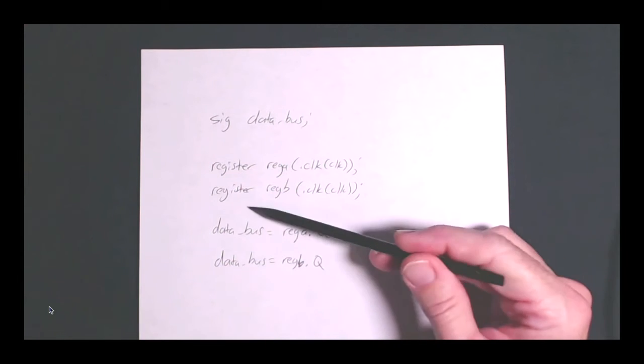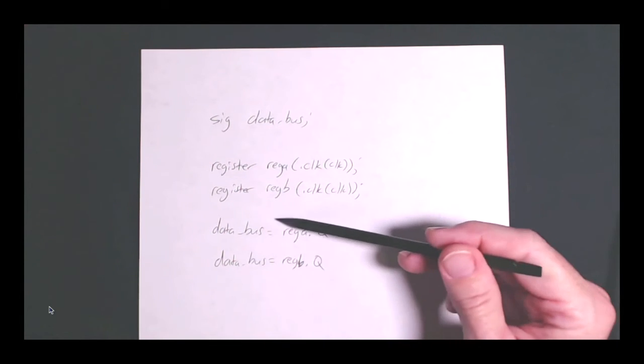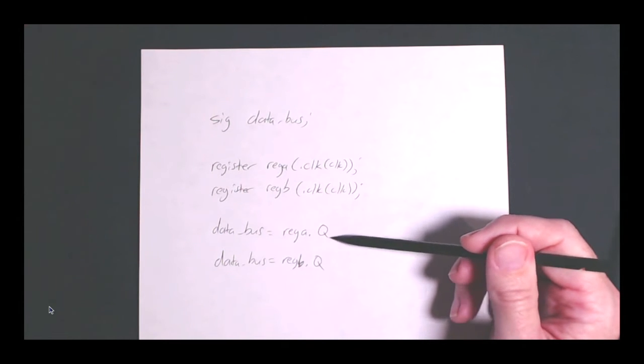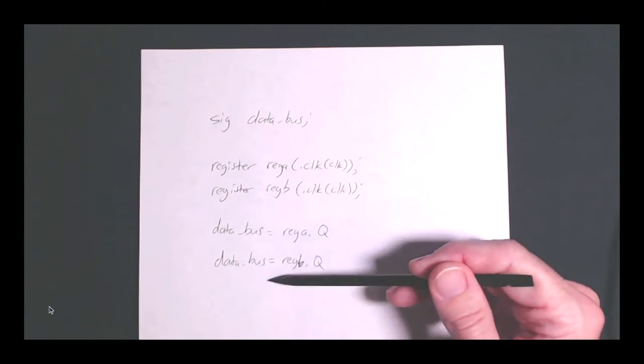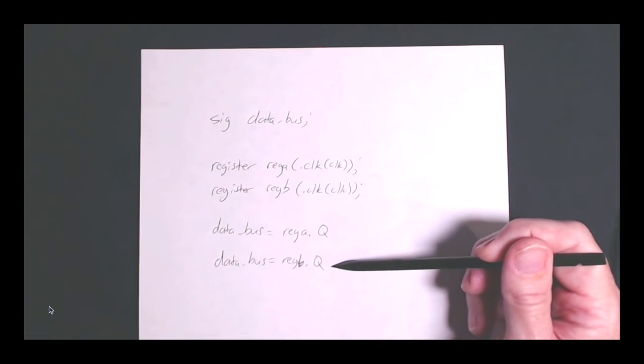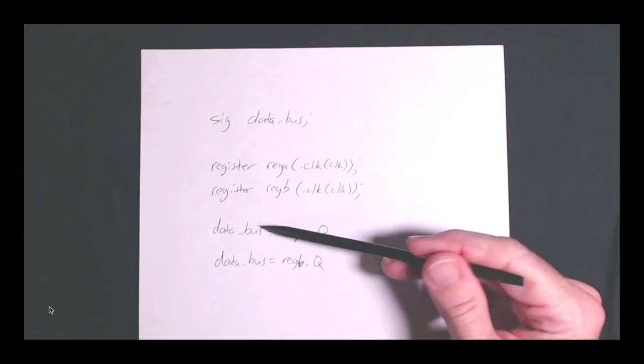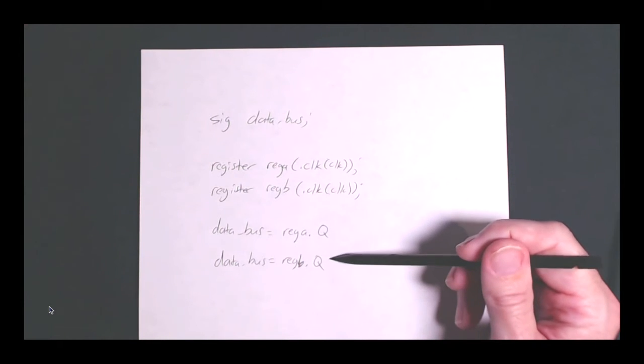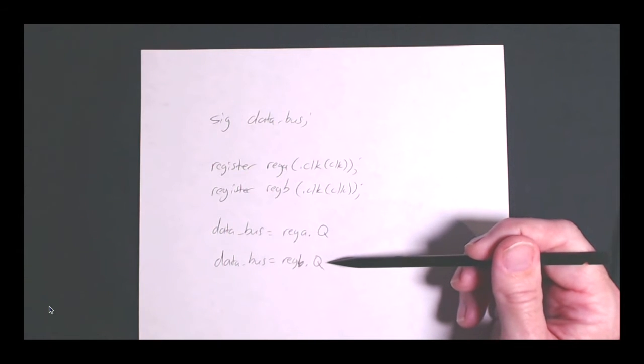There's no construct in the Lucid language, or maybe it's Verilog. I'm not a hundred percent sure, but in any case, if you specify this in code, you will never get the value of reg a onto the data bus. You'll only get this register. So that's a problem.